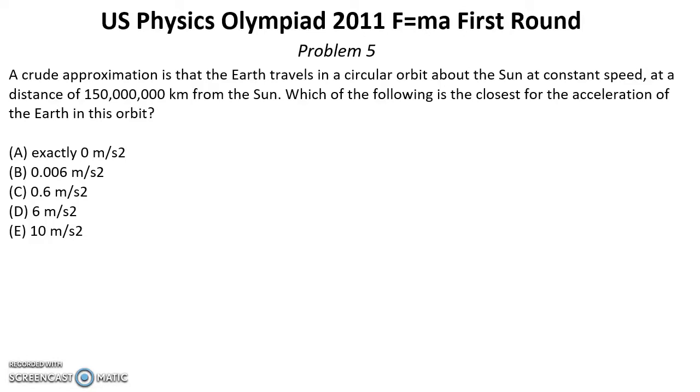Problem five. A crude approximation is that the Earth travels in a circular orbit above the Sun at constant speed at a distance of 150 million kilometers from the Sun. Which of the following is the closest for the acceleration of the Earth in this orbit.